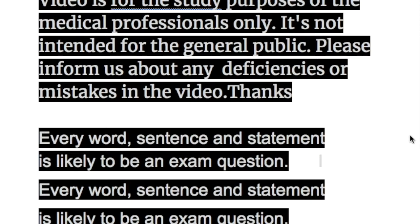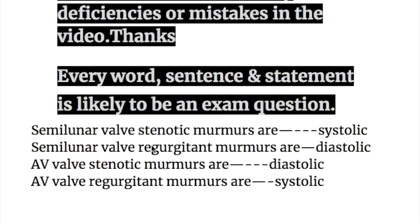In this video, we will discuss the location and radiation of the semilunar valve murmurs, and their clinical features only. Generally speaking, semilunar valve stenotic murmurs are systolic, and semilunar valve aortic and pulmonary valve regurgitant murmurs are diastolic. The reverse is true of the AV valve: the mitral and tricuspid valve stenotic murmurs are diastolic, whereas AV valve regurgitant murmurs are systolic.